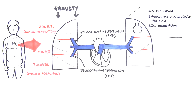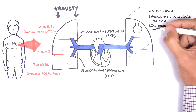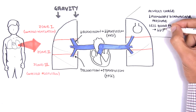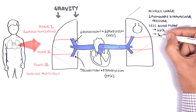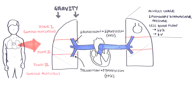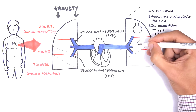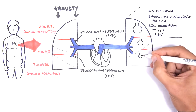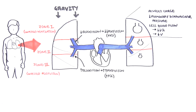Less blood flow means less perfusion. In the apex, you also have less ventilation occurring because of your large alveoli. But despite the reduced ventilation, the perfusion is far more reduced here. And so you actually have wasted ventilation, which means you have a lot of gas, a lot of oxygen to offer, but not enough red blood cells around.